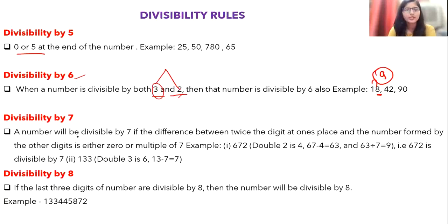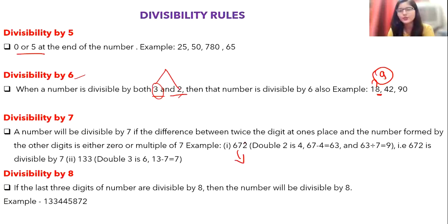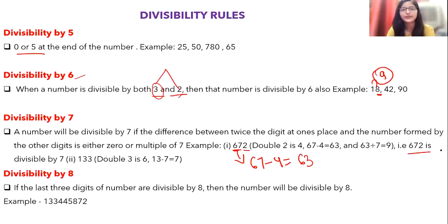For divisibility by 7: a number is divisible by 7 if the difference between twice the digit at the units place and the number formed by the remaining digits is either 0 or a multiple of 7. For example, take 672. The units digit is 2, twice of which is 4. The remaining number is 67. So 67 − 4 = 63, and since 63 is divisible by 7, we conclude 672 is divisible by 7.